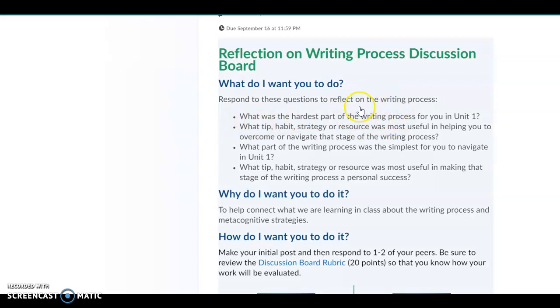And you can use that to help you just answer these four questions. The first one is what was the hardest part of the writing process? Was it planning, outlining, or drafting? What was the hardest part of the process? And what tip, habit, strategy, or resource did you use to help you overcome the hardest part of the process?